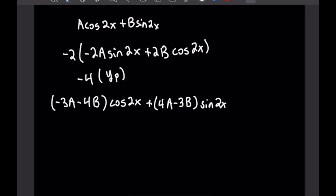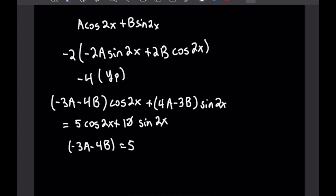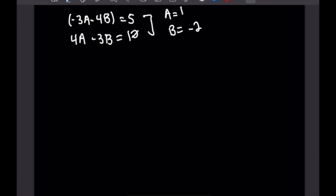Setting that equal to the right-hand side 5cos(2x) + 10sin(2x) and matching coefficients gives us the system: -3A - 4B = 5 and 4A - 3B = 10. Solving this system yields A = 1 and B = -2. So the particular solution is Y_p = cos(2x) - 2sin(2x). That finishes problem 1. Let's get into the next problem.